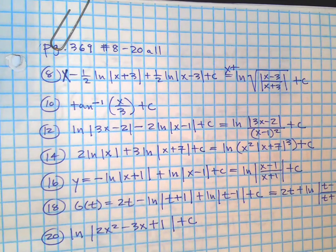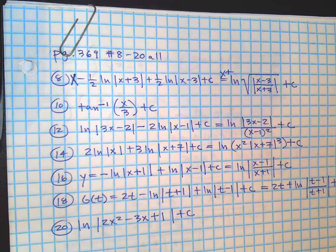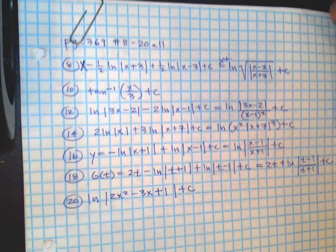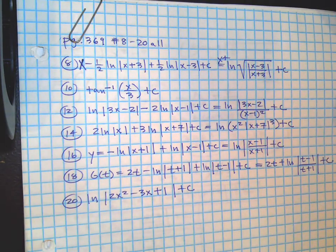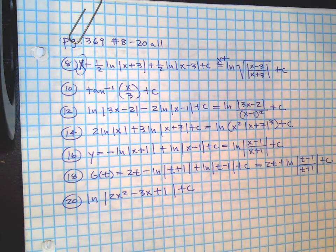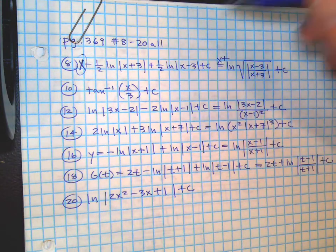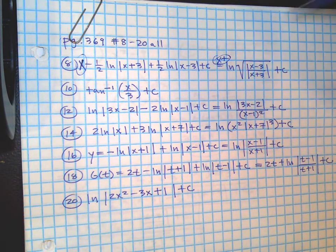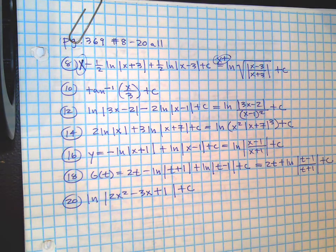AP Calculus BC, Unit 5, Day 3, Office Hours. These are the even answers. I think I might have had one mistake on the inversion — it should be an X, not a 1, which makes a big difference. So there should be an X plus there. These are the even problems; pause it if you need to and check these.